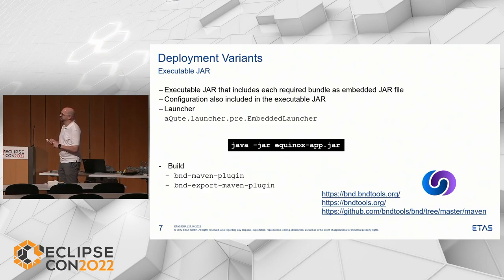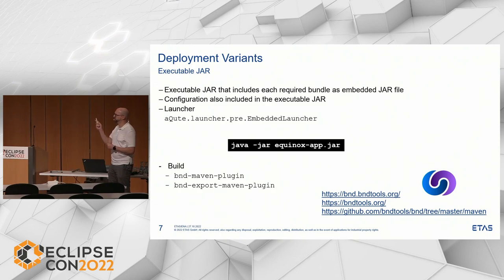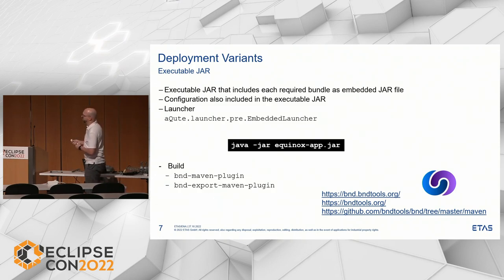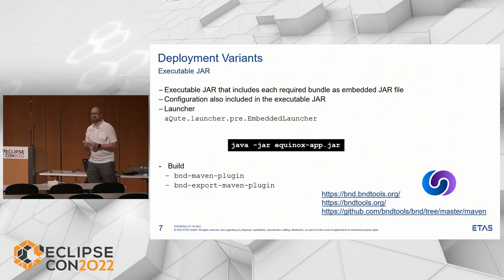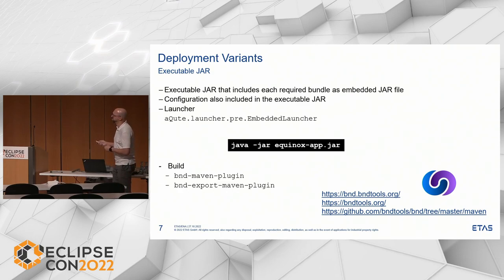Creating an executable JAR is for OSGI people about as easy as for typical Java developers, because we have the BND tools — the Swiss army knife of OSGI. It helps you in a lot of places, generating manifest files and so on. They have a nice export plugin in Maven and even in Gradle, so you can build your executable JAR in a single build step.